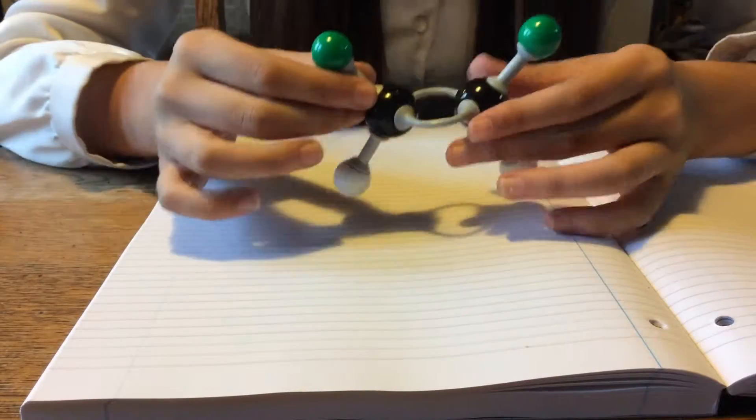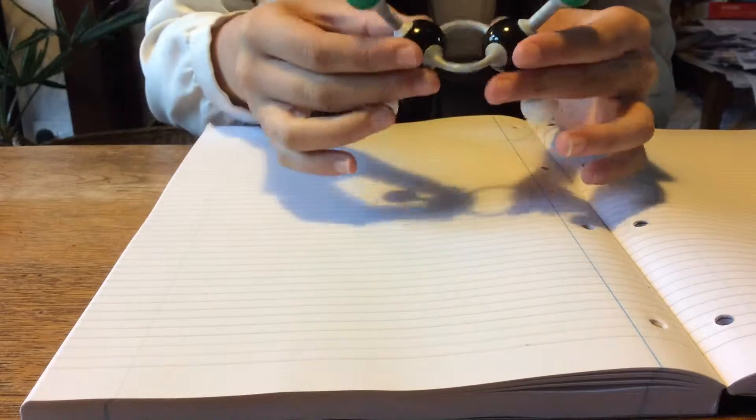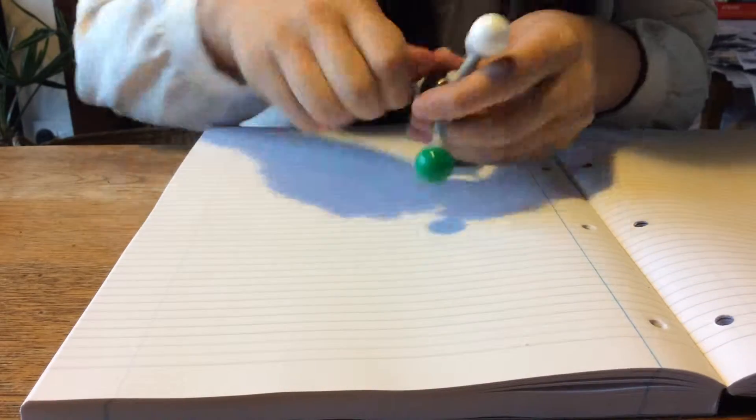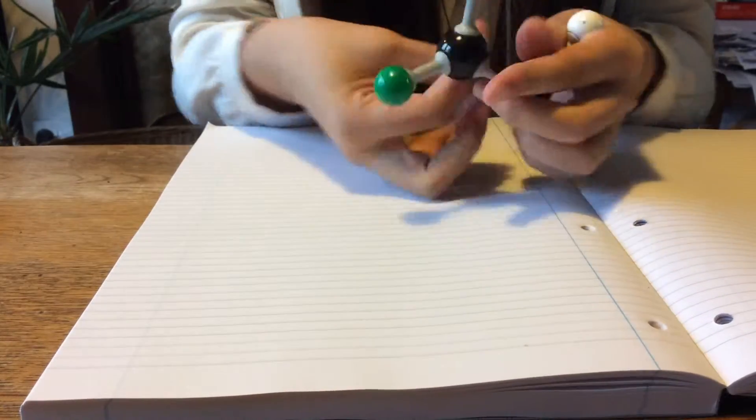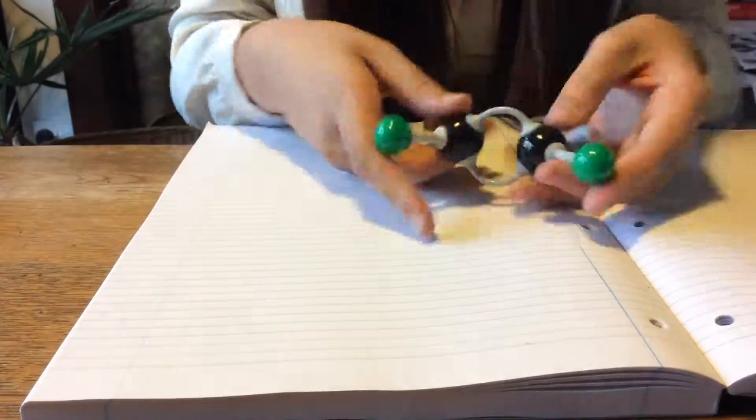Another group that exists is the symmetric group. We've seen this group earlier with the Rubik's cube. So how is this molecule similar to the Rubik's cube we saw earlier? Well, with this molecule you've got a plane of symmetry that's going vertically through the molecule.